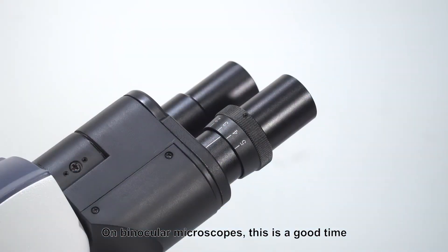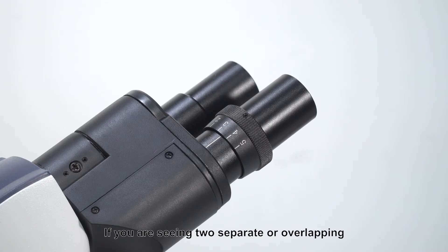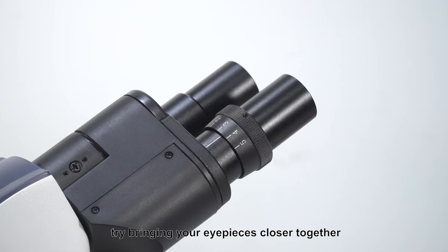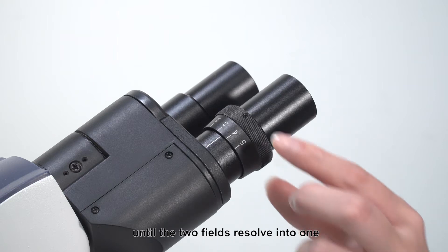On binocular microscopes, this is a good time to check your eyepiece alignment. If you are seeing two separate or overlapping images instead of one circular field of view, try bringing your eyepieces closer together until the two fields resolve into one.